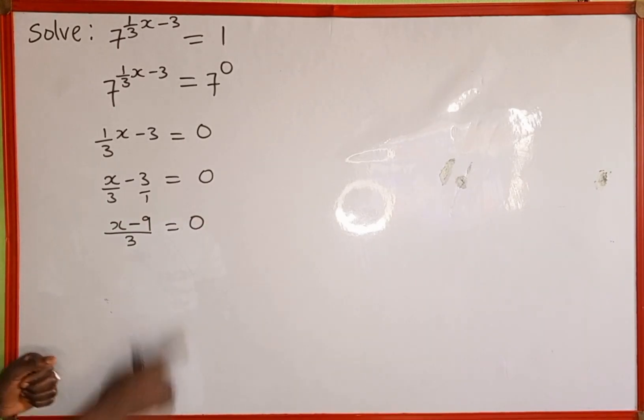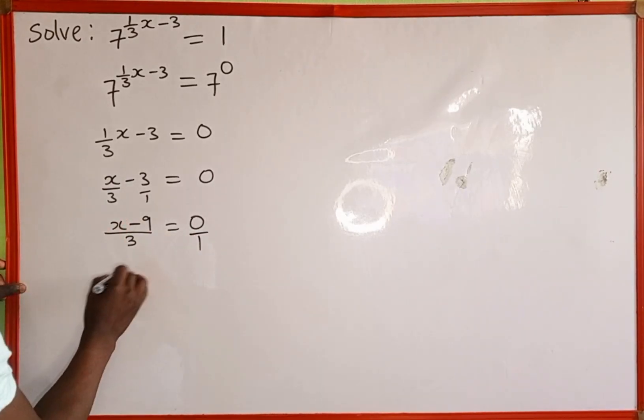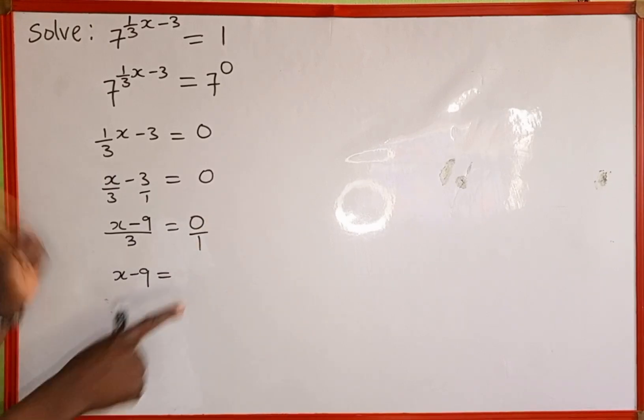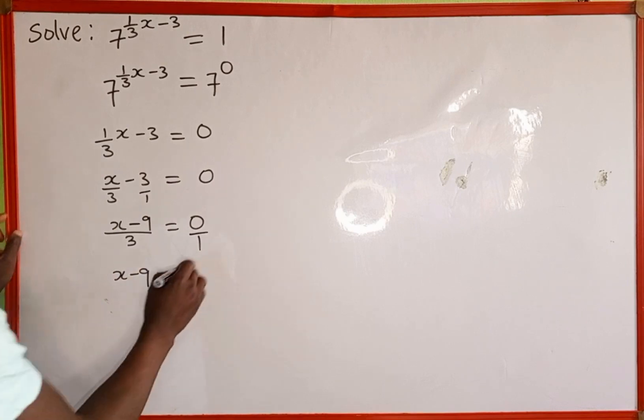Now we're going to cross multiply. 0 is the same as 0 over 1. Then 1 multiplied by this is the same as x minus 9, which equals 3 multiplied by 0. Anything multiplied by 0 is the same as 0.